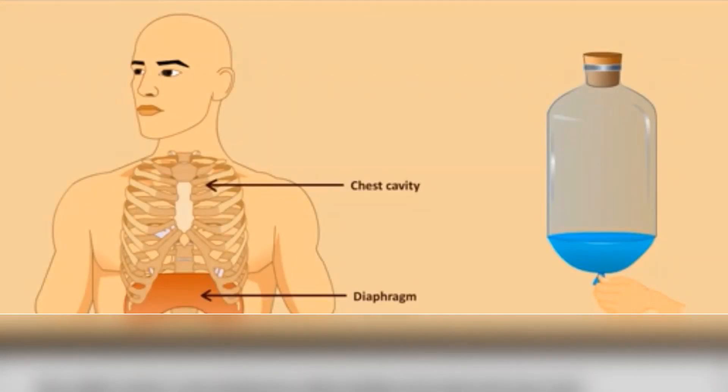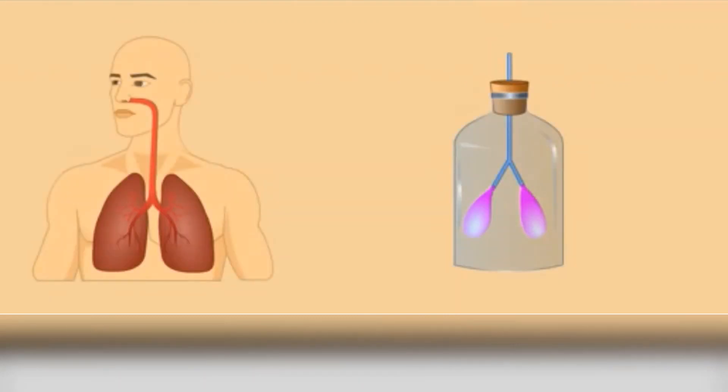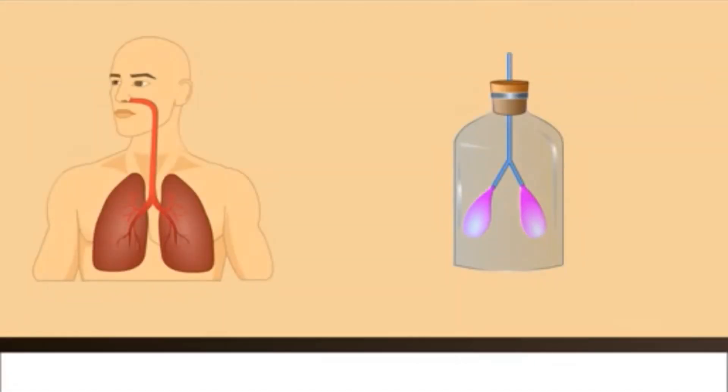The rubber sheet is the diaphragm which divides the body into two parts. The upper part is the chest cavity. The Y-shaped tube is the trachea and the bronchi. The balloons are like the lungs which are situated in the chest cavity.